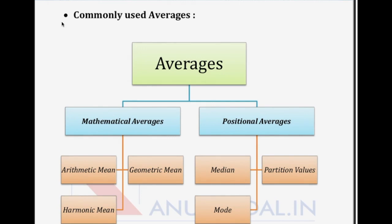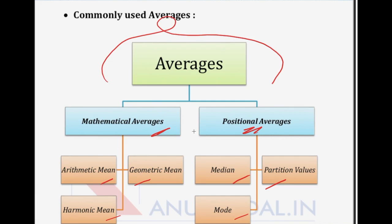Now let's talk about which averages are commonly used. Averages can be divided into two parts: mathematical averages and positional averages. Under mathematical averages we will study arithmetic mean, geometric mean, and harmonic mean. Under positional averages we will learn about median, partition values, and mode. All of these topics will be covered in detail in the next lectures of this series. I hope you found this video good and informative. If you liked this video, hit the like button, press the bell icon, and subscribe to our channel. Stay connected through our Telegram group for regular updates regarding the Net JRF examination. Thank you for watching.